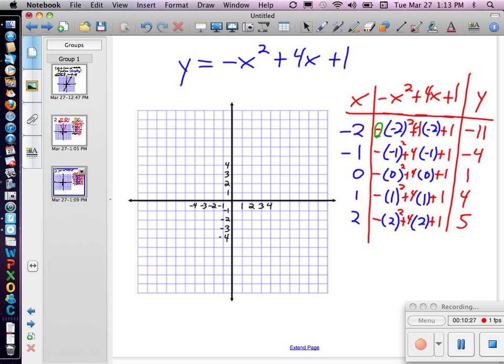So if I were to graph this, I have negative 2, negative 11. So that's way down here. And negative 1, negative 4. We have 0, 1. It's like right there. We have 1, 4, 2, 5. So as we're doing this, we realize, oh, that doesn't look anything like that last picture. What I'm seeing here is like a curve kind of like that.